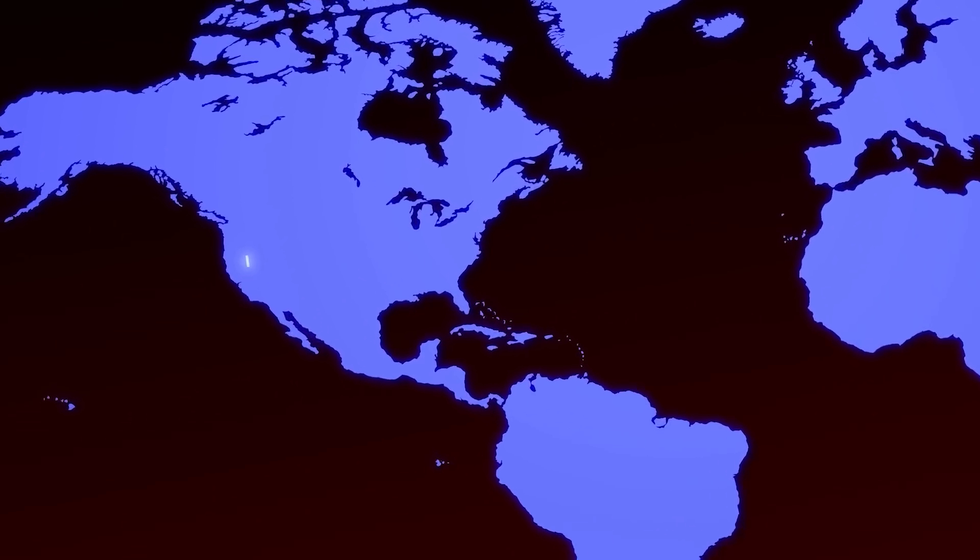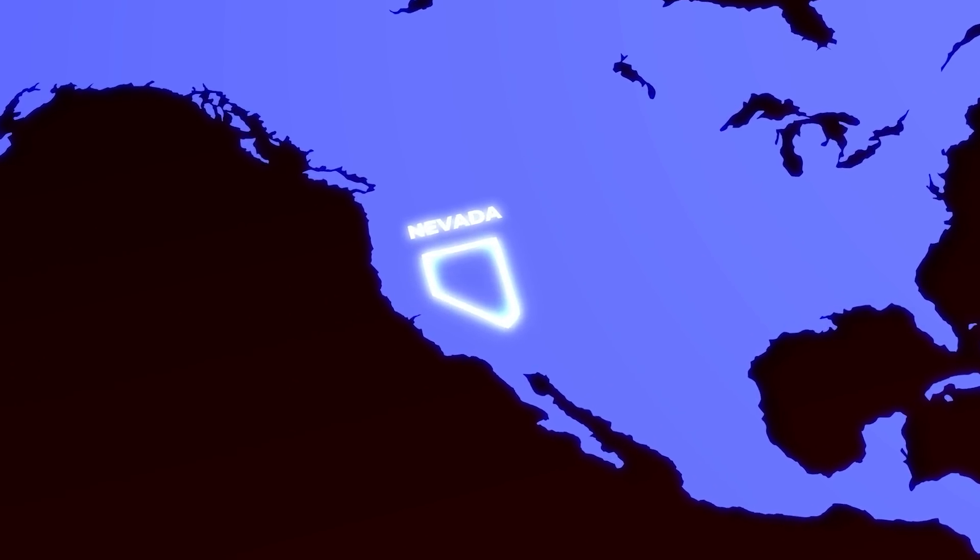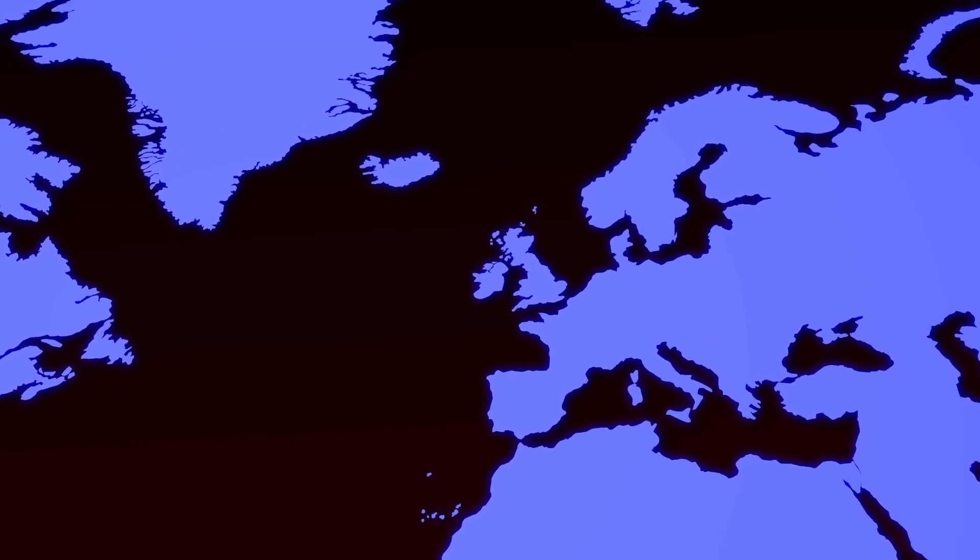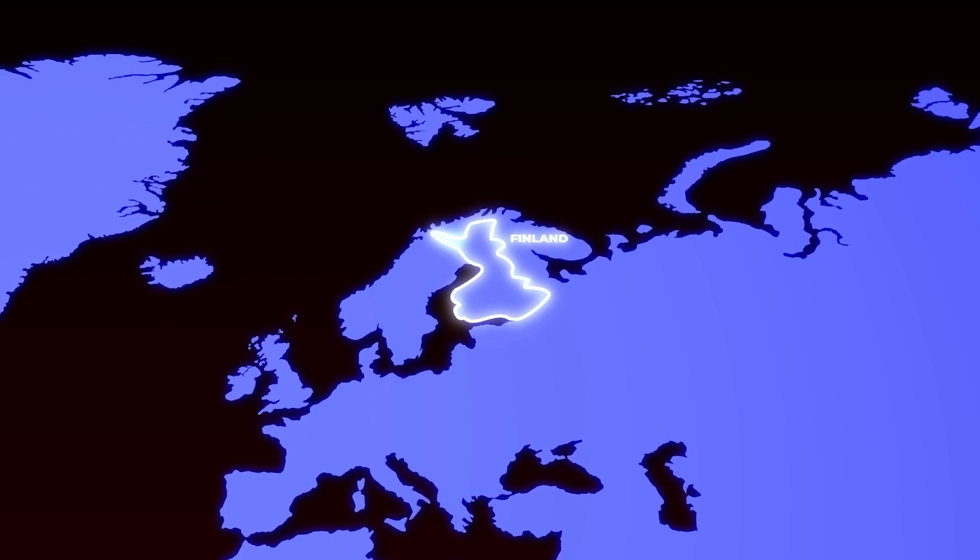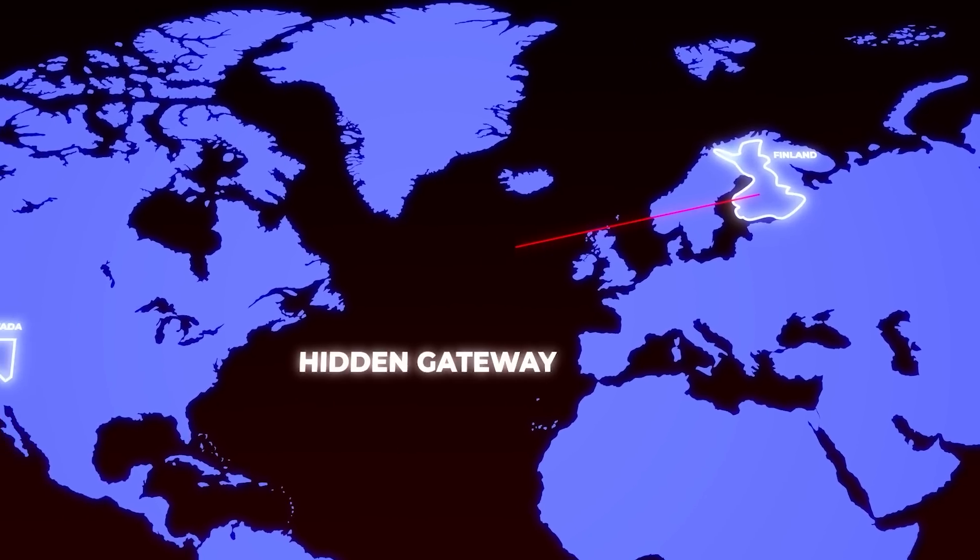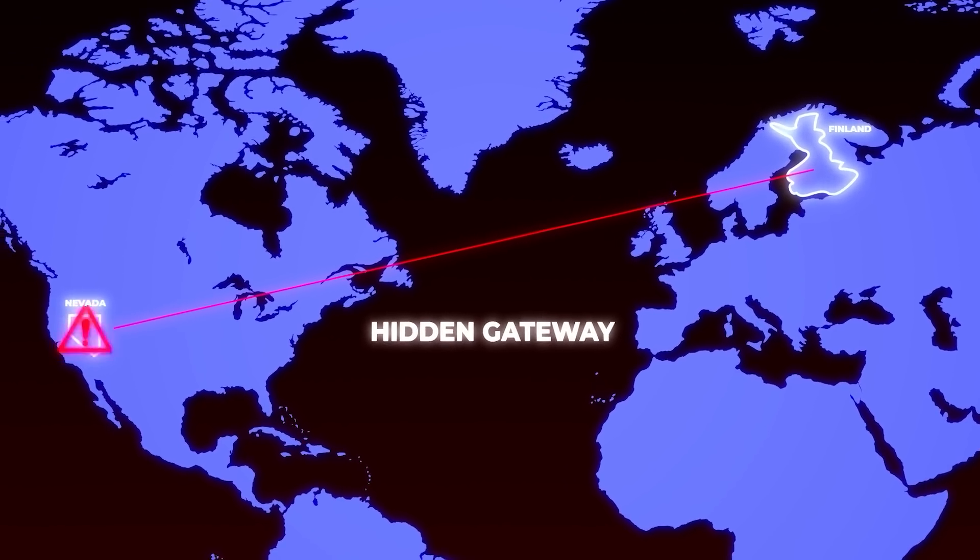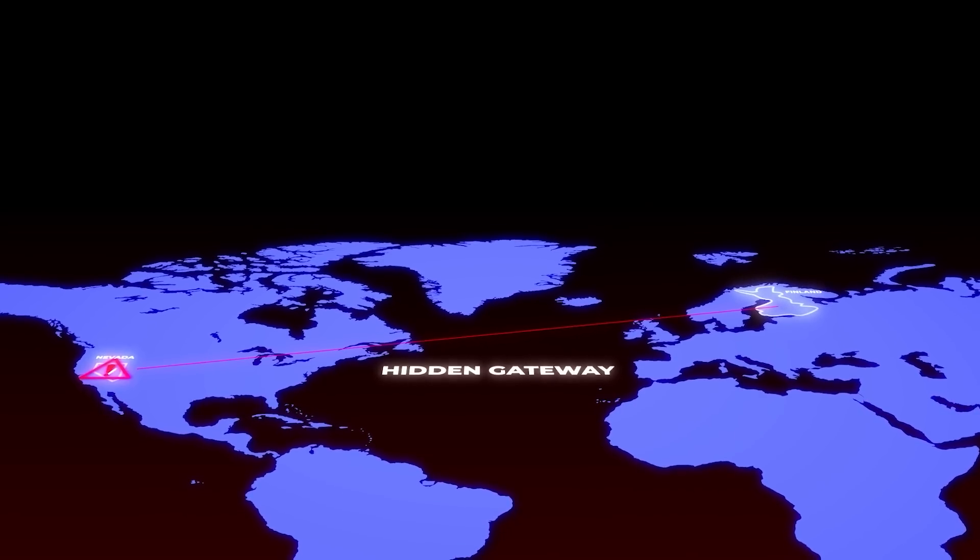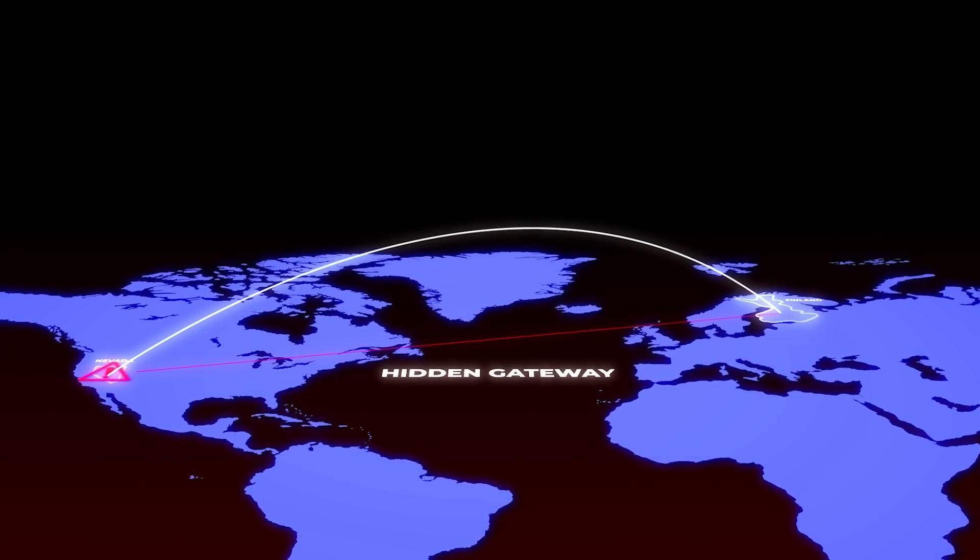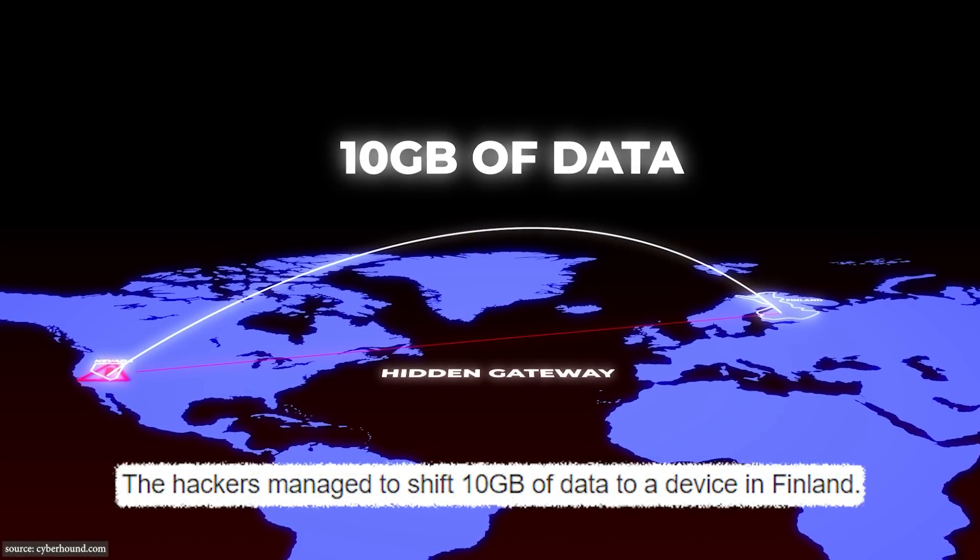Intriguingly, further investigation revealed that some of the suspicious external IP addresses were traced back to Finland, adding an international dimension to the breach. What they found was a hidden gateway that had been cleverly embedded within the thermostat software, a gateway through which hackers were funneling valuable data. Remarkably, over 10 gigabytes of sensitive data were transmitted to these Finnish locations.